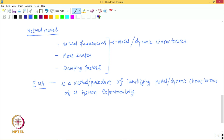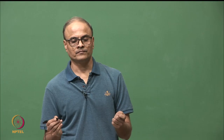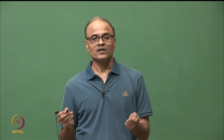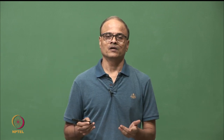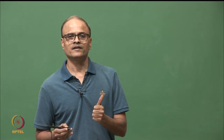Later we will look at what is the motivation for identifying these characteristics and how they help us. Now, another important thing to note is that natural modes are defined for a linear system. Therefore, one of the important assumptions in modal analysis is that the system is linear. Modal analysis — experimental or analytical — assumes the system to be linear.